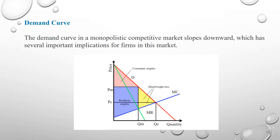Now we will learn about the demand curve. The demand curve in the monopolistic competitive market slopes downward, which has several important implications for firms in this market. As you can see from this chart, the demand curve marked in red slopes downward, indicating significantly elastic demand.